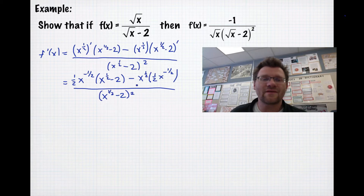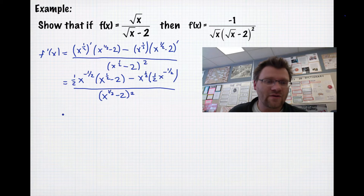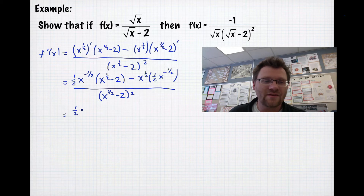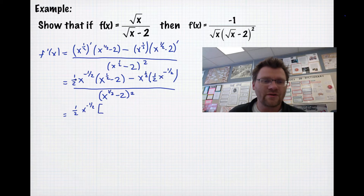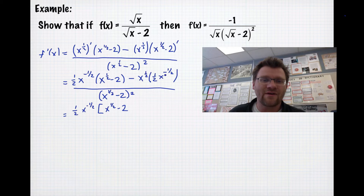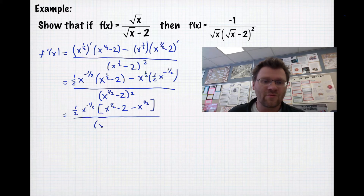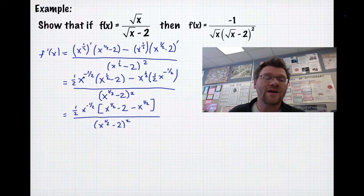Next, we take out a greatest common factor. We take out one half and x to the negative half, because there's a half in both terms, and when we have fractional exponents we always take out the one with the smallest exponent — negative half is smaller than positive half. After factoring out one half times x to the negative half, we're left with x to the half minus 2 in the first bracket and negative x to the half in the second bracket.